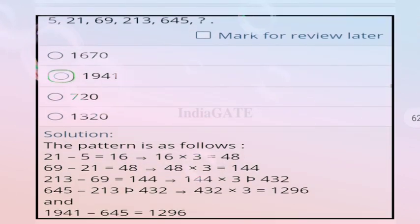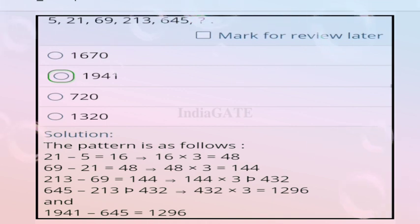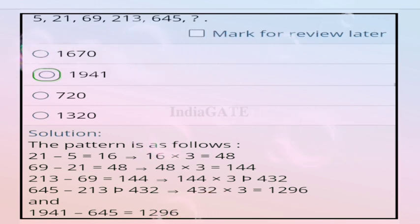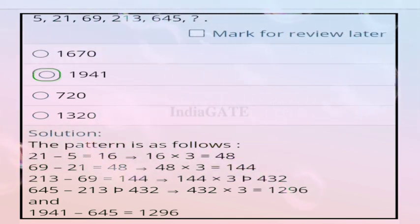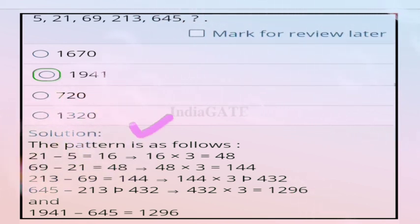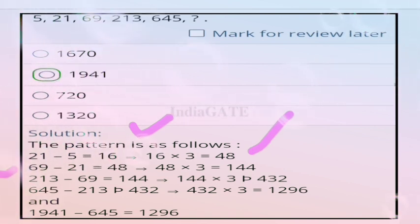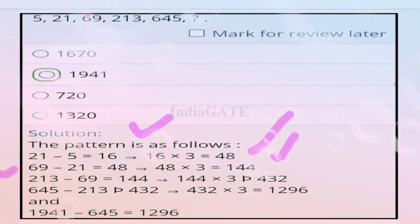For question 40, the series is 5, 21, 69, 213, 645. The pattern: 21 - 5 = 16, 16 × 3 = 48; 69 - 21 = 48, 48 × 3 = 144; following this pattern, the correct answer is option B, 1941.